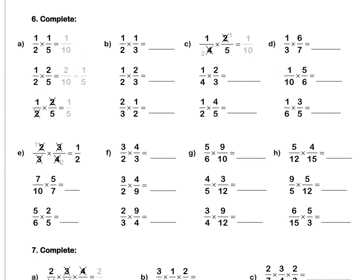Therefore, when we multiply fractions, we always simplify our fraction in the sum before multiplying out. We can see here it's 1 half times 2 fifths. We divide the top 2 and the bottom 2 by the same number, by 2: 2 divided by 2 is 1, and 2 divided by 2 is 1. We've simplified our fractions in the sum. Then, 1 times 1 is 1, and 1 times 5 is 5.